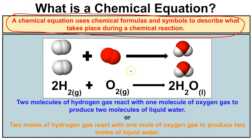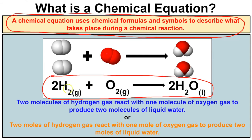Here is a visual representation of a chemical reaction. What we see is an actual chemical equation using different chemical formulas, symbols, and coefficients to describe what is taking place on a molecular level. We can say either two molecules or two moles of hydrogen gas react with one mole of oxygen gas to produce two moles of water. In this video, we are going to start learning how to write chemical equations, but first let's look at the different parts.